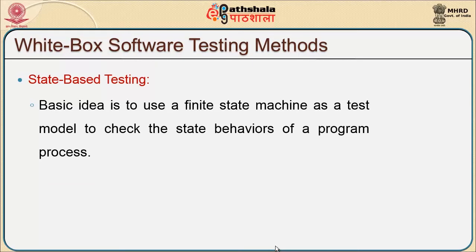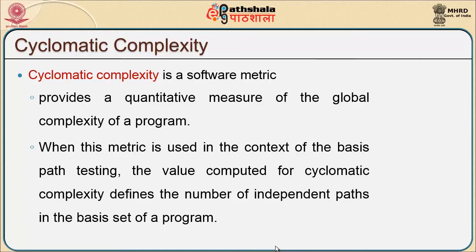The third method as part of basis path testing is state-based testing, where the basic idea is to draw a finite state machine as a test model which checks the state behavior of a program process. When we draw a basis path testing method to understand the different paths associated with a problem, we calculate a metric called cyclomatic complexity. Cyclomatic complexity is a software metric that gives us a quantitative measure of the global complexity of a program.